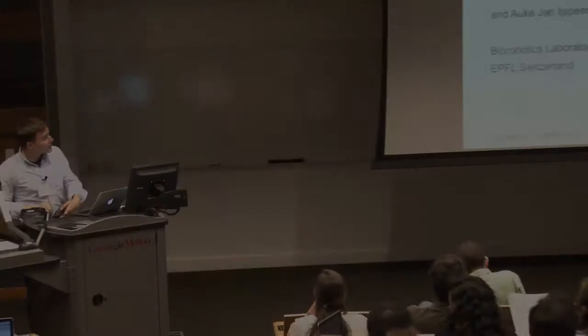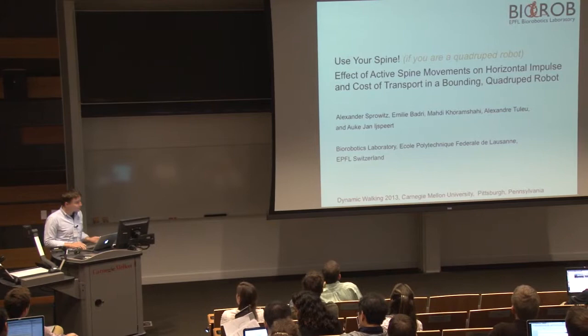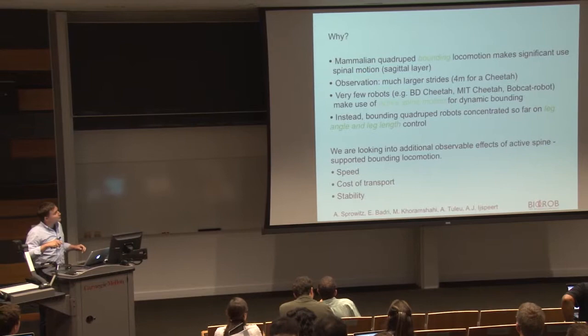Hello, everybody. My name is Alexander. I'm from EPFL, Switzerland. I'm going to show you our work on our quadruped robot and specifically the influence of the active spine. If you look at mammalian quadruped animals who are bounding, they make significant use of active spine motion. The obvious reason is that you get much larger stride lengths — up to 4 meters for a cheetah, which is about 1.5 meters long — giving a significant win in speed.